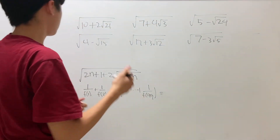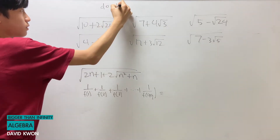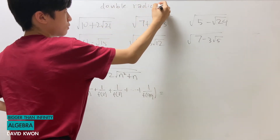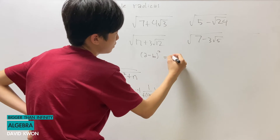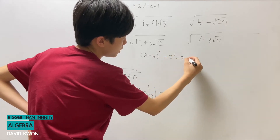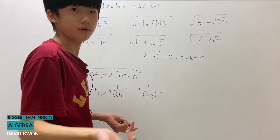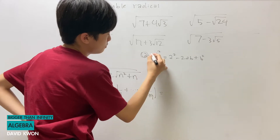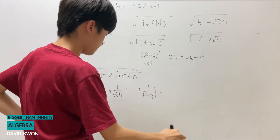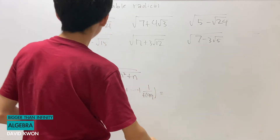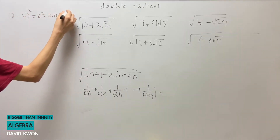Hello everyone, and today we have double radicals. Basically, if we have (a minus b) squared, it is equal to a squared minus 2ab plus b squared. The a and b can be any number — it can even be the square root of a number.